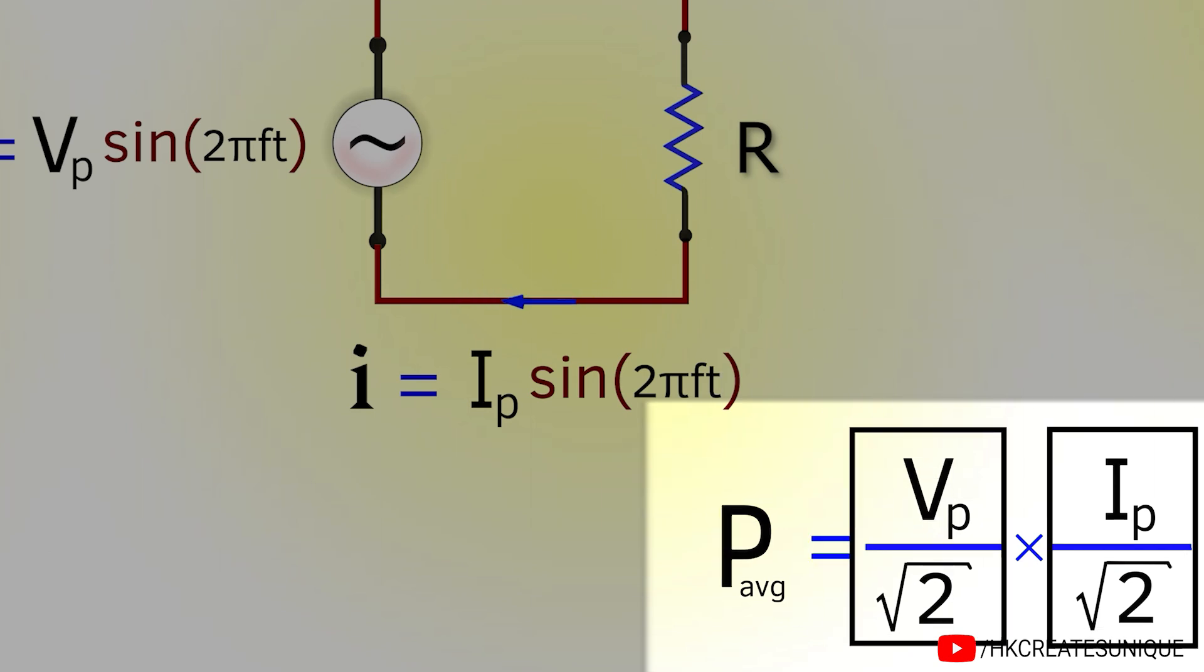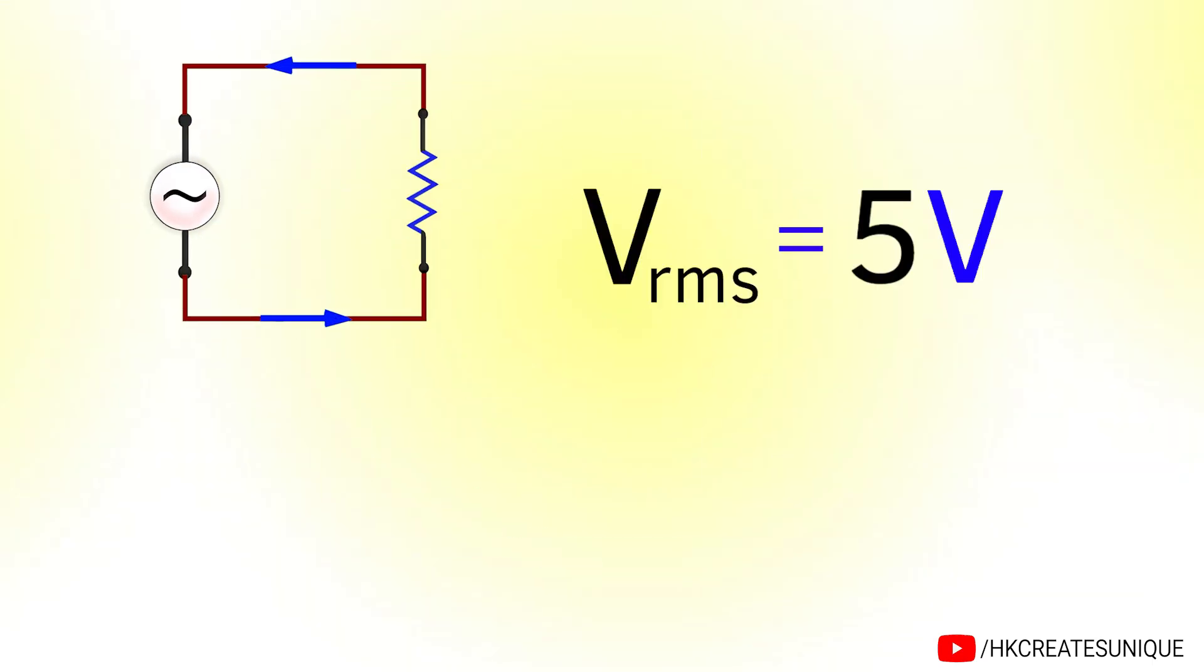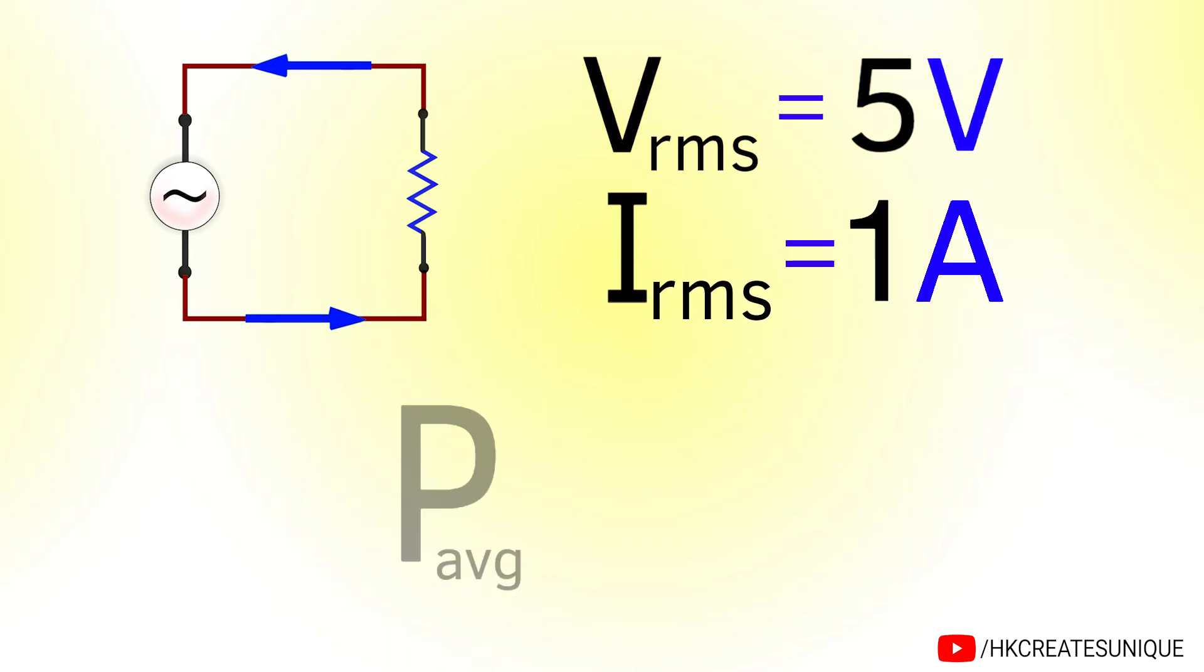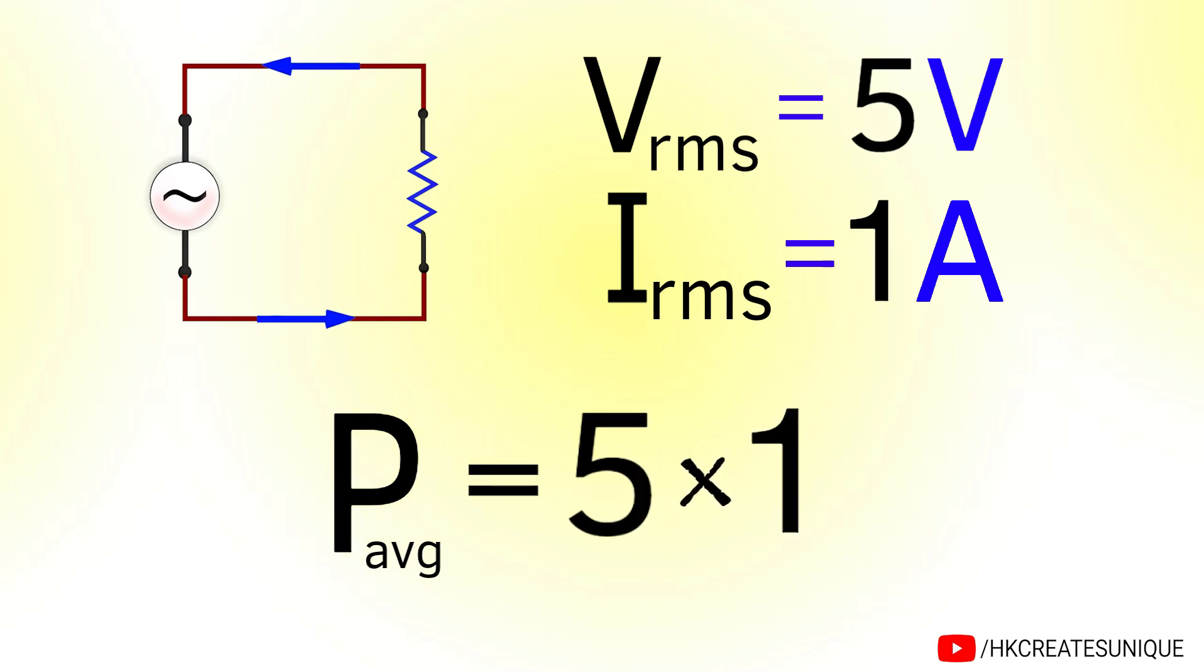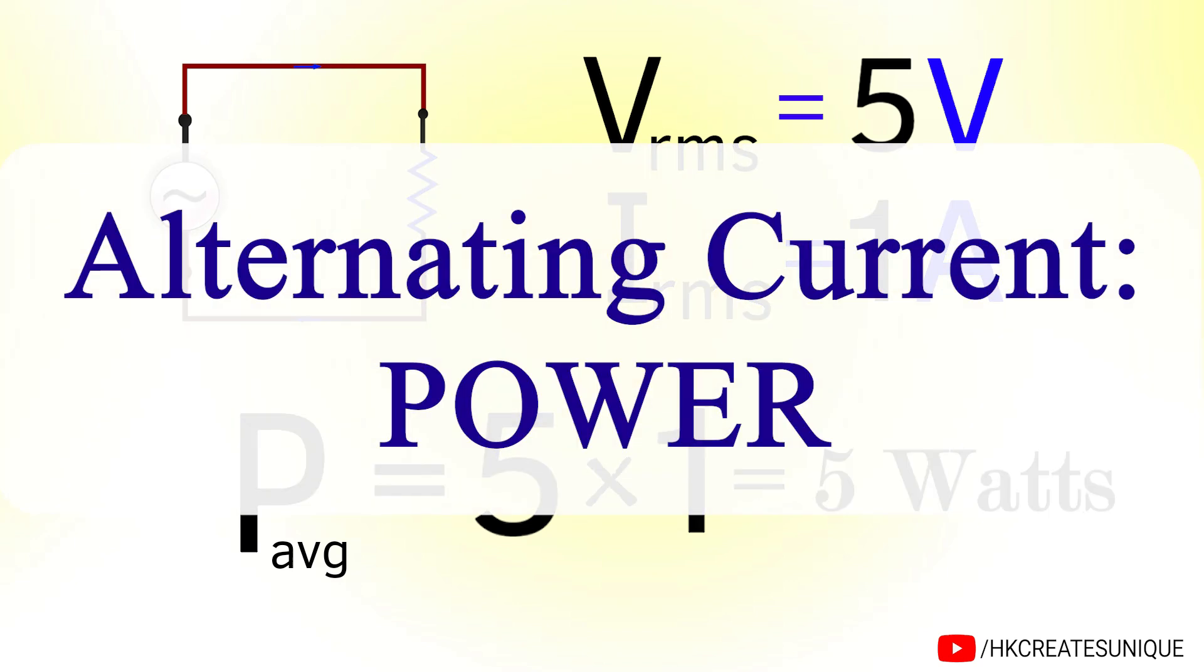Separating voltage and current we get this. These two values are called RMS values, sometimes also called effective values. As an example, for RMS voltage of 5 volts and RMS current of 1 ampere, average power delivered to the load is 5 multiplied by 1 which equals 5 watts. I will discuss about this and much more in my alternating current power video.